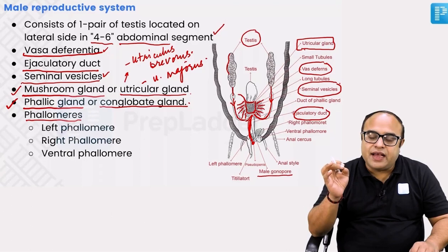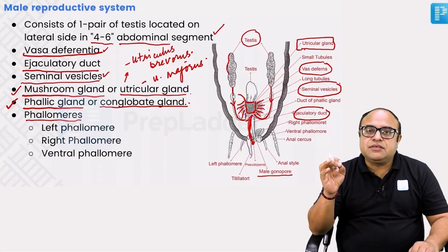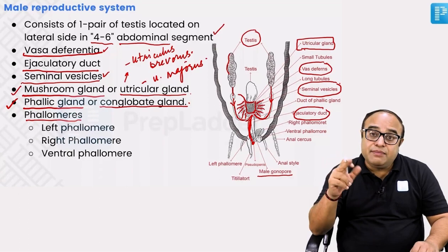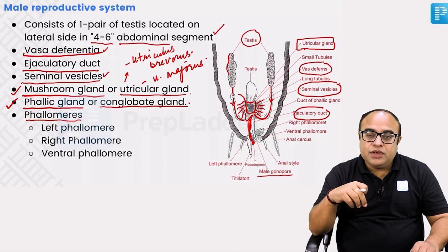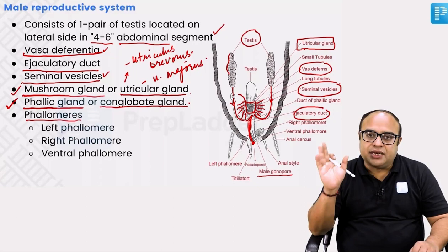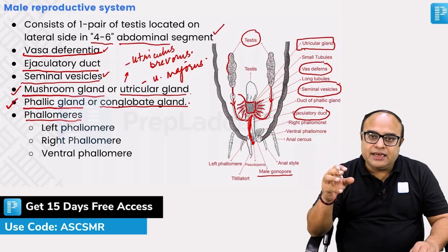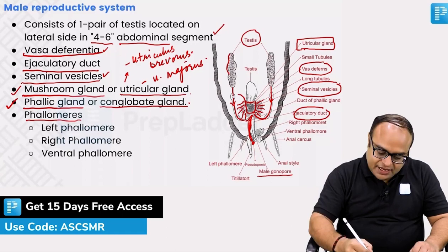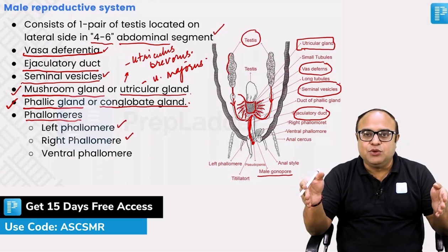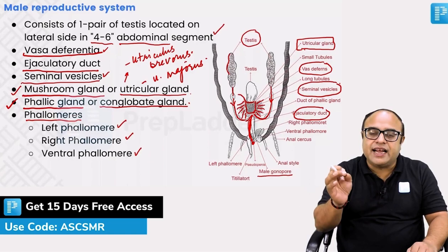A very important structure to remember is phallomeres. These are chitinous structures which cover and overhang above the male gonopore, made up of chitin. A similar structure is present in the female counterpart of the cockroach as well. The phallomere is divided into three major types: the left phallomere, the right phallomere on the two lateral sides, and a ventral phallomere on the ventral side of the male gonopore.